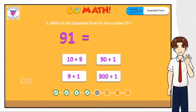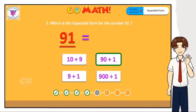Which is the expanded form for the number 91? The digit 9 is in the tens place, so the value of 9 is 90. The digit 1 is in the ones place, so the value of 1 is 1. Together, the expanded form for the number 91 is 90 plus 1. You are right — the correct answer is 90 plus 1.